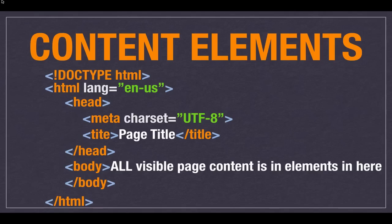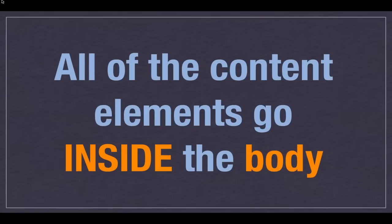What we left off last time in part 2 was we had a full document without any content. We basically had our doctype, our HTML tag, inside of that the head tag which also had the meta and the title tag, and then we had our body. All the visible content is going to go in the body. All the content elements go inside of the body — all the elements we're going to see today are ones that should go inside of the body element.